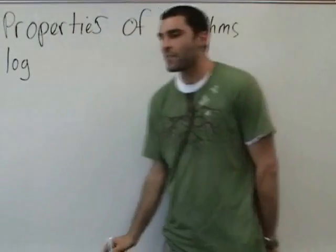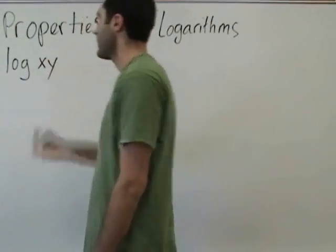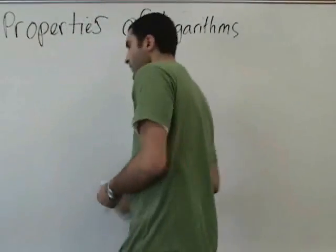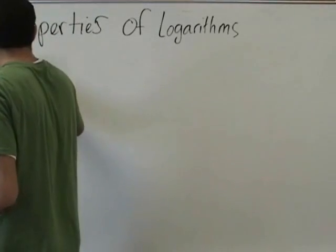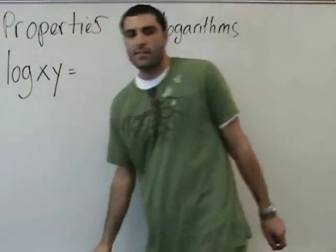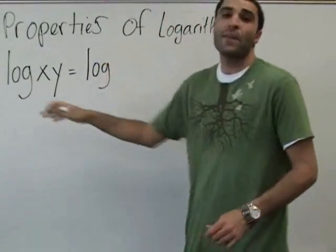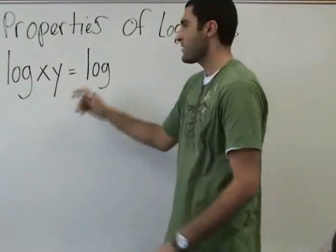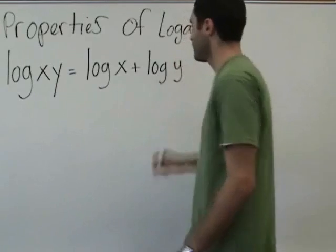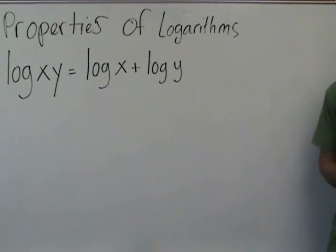So, if you have the log of a product, let's say xy. I'm going to write this massive. I'm going to write it big. Log of xy. This equals log of x plus log y. Now the base could be anything, so I'll leave it blank. So that's one property of logs.